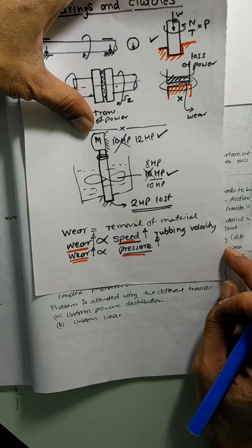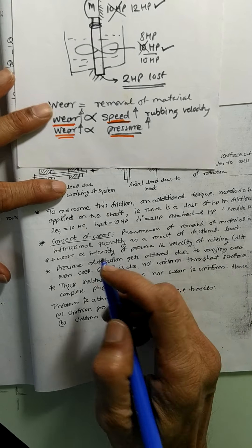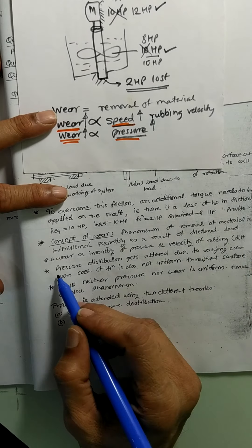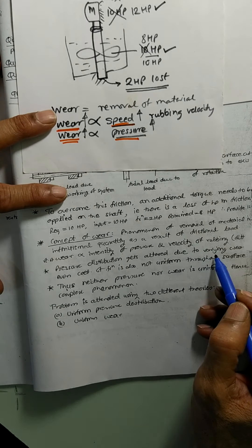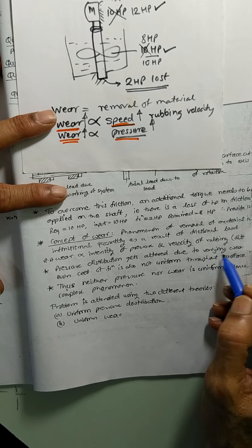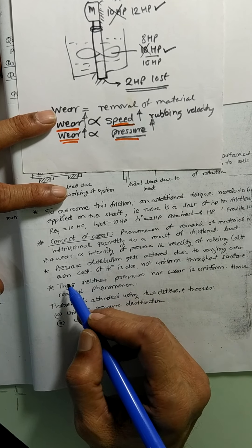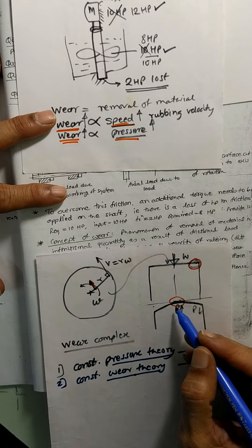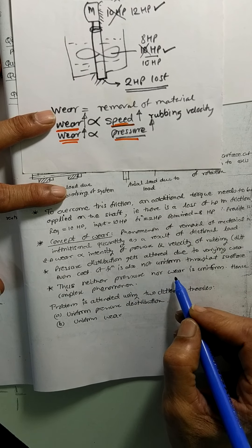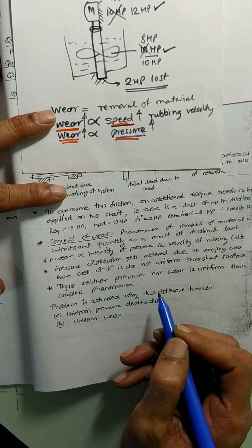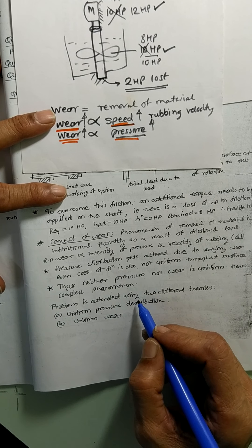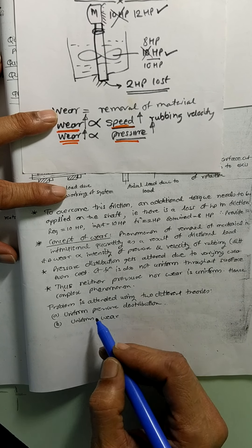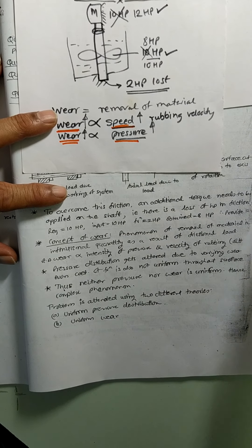In the constant pressure theory, we assume pressure is constant throughout and work ahead. In the constant wear theory, we assume wear is constant and work ahead. So this complex problem is resolved by these two theories. The rate of wear is proportional to intensity of pressure and velocity of rubbing; pressure distribution gets altered due to varying wear conditions. Even the coefficient of friction may not be uniform throughout the surface. Thus neither wear nor pressure is uniform — hence it is a complex phenomenon attended by using uniform pressure theory and uniform wear theory.